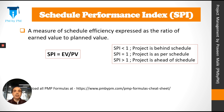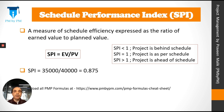Schedule performance index is a measure of schedule efficiency expressed as a ratio of earned value to planned value. The formula is SPI = EV divided by PV. Just like schedule variance, we have the schedule performance index — but here we are finding the ratio rather than the difference. For our example project, SPI is 0.875. SPI less than 1 means the project is behind schedule, SPI equal to 1 means the project is as per schedule, and SPI greater than 1 means the project is ahead of schedule.